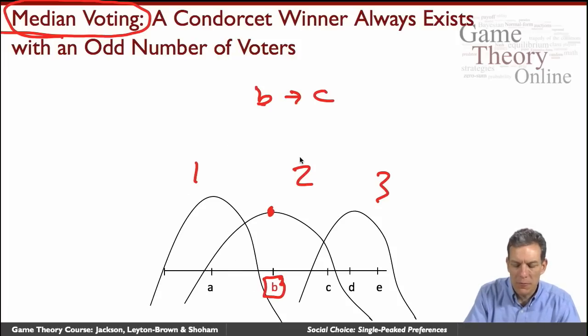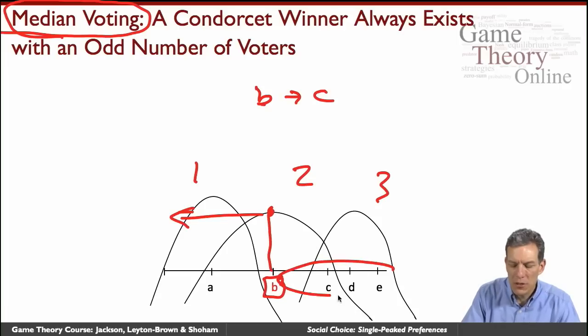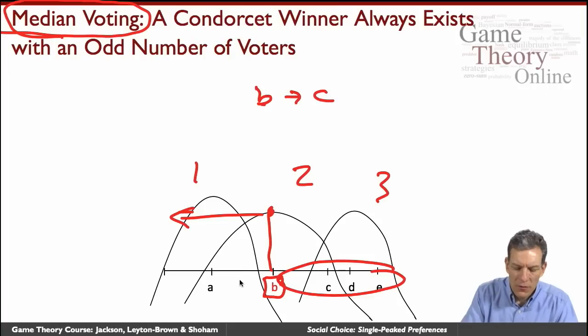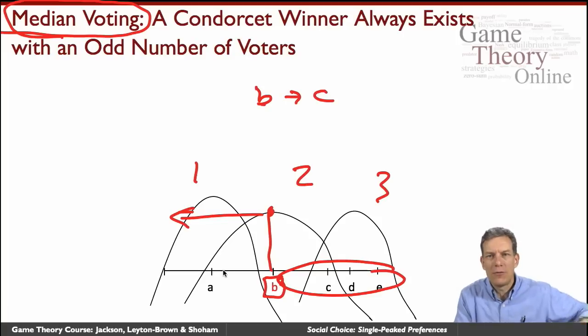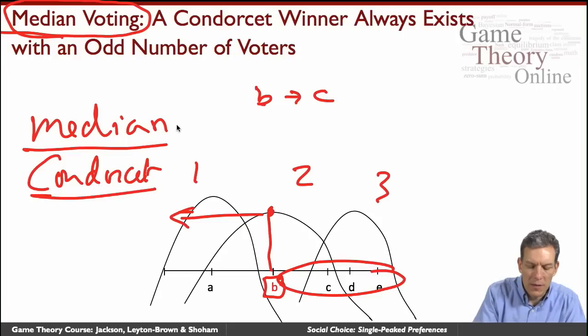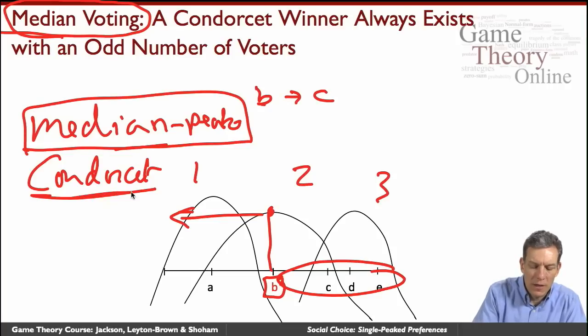So given the fact that we've got, when we look at the median voters, all the voters to the left of the median are going to prefer the median's peak to any alternative which lies to the right. Because going to the right further to the right is bad. And similarly, we're going to have a majority of people on the right preferring the median's alternative to anything that's to the left of the median's alternative. The median's most preferred alternative. So the median outcome here, median outcome is a Condorcet winner, meaning median peak here.